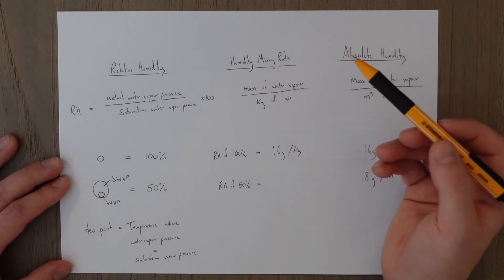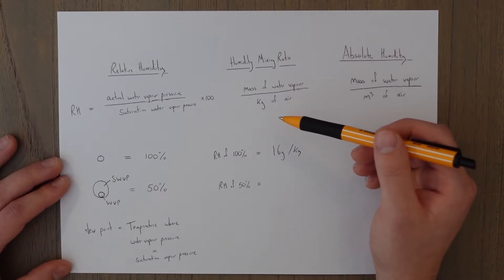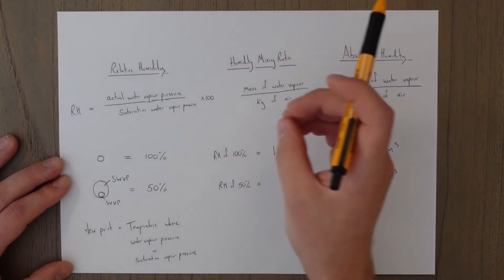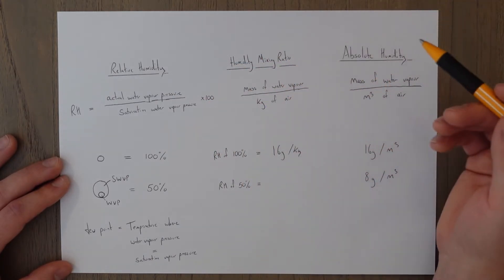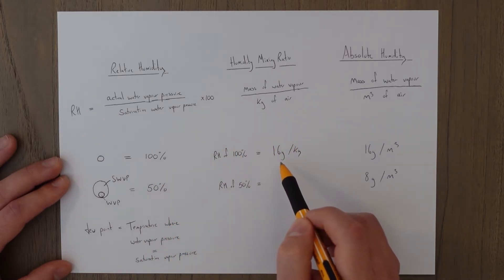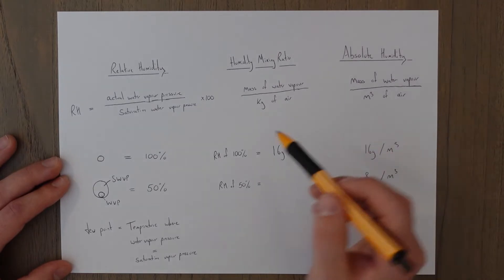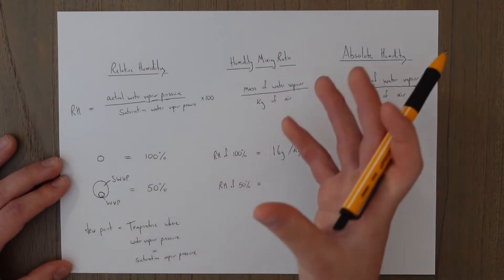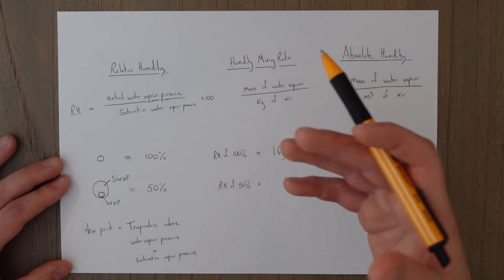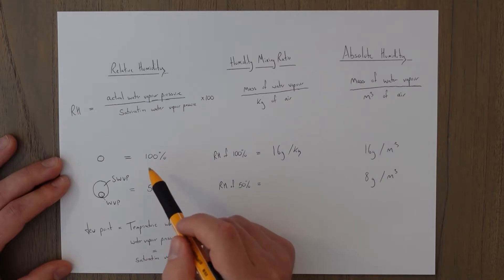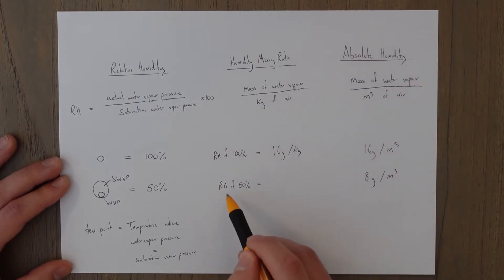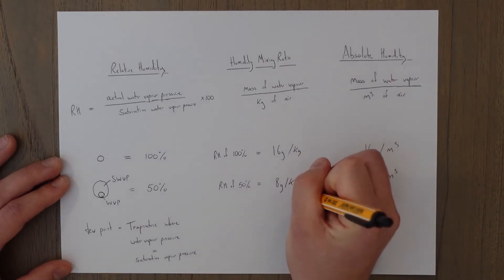The humidity mixing ratio describes how many grams of water vapor are held within a specific kilogram of air. As air increases in temperature it will be able to hold more grams of water per kilogram — the saturation water vapor pressure goes up, meaning more water vapor molecules can come in and the weight increases. For example, a mass of air with a relative humidity of 100% might have a humidity mixing ratio of 16 grams per kilogram. Note that 100% relative humidity doesn't mean all of the air is water — it means the air is 100% saturated. So at 50% relative humidity we'd have 8 grams per kilogram.